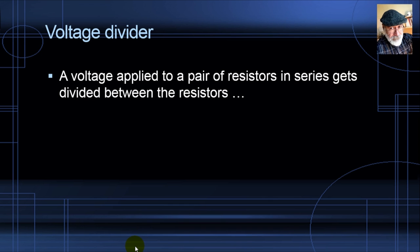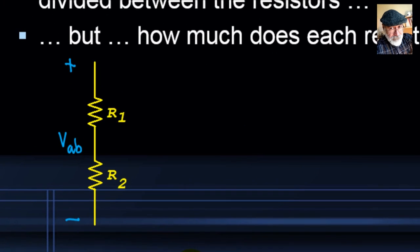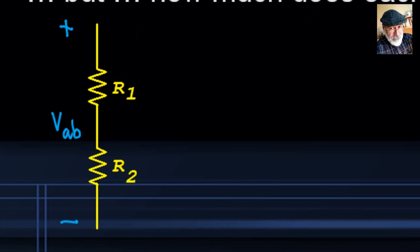A voltage applied to a pair of resistors in series gets divided between the two resistors. That voltage Vib applied to the series combination of R1 and R2 gets split between them. The question is: how much of that voltage does each resistor receive? R1 gets V1 and R2 gets V2.